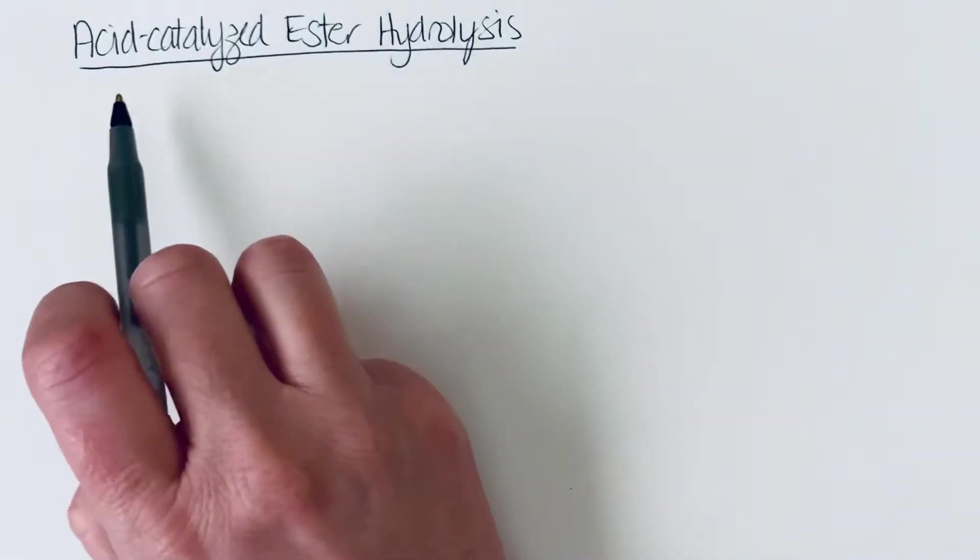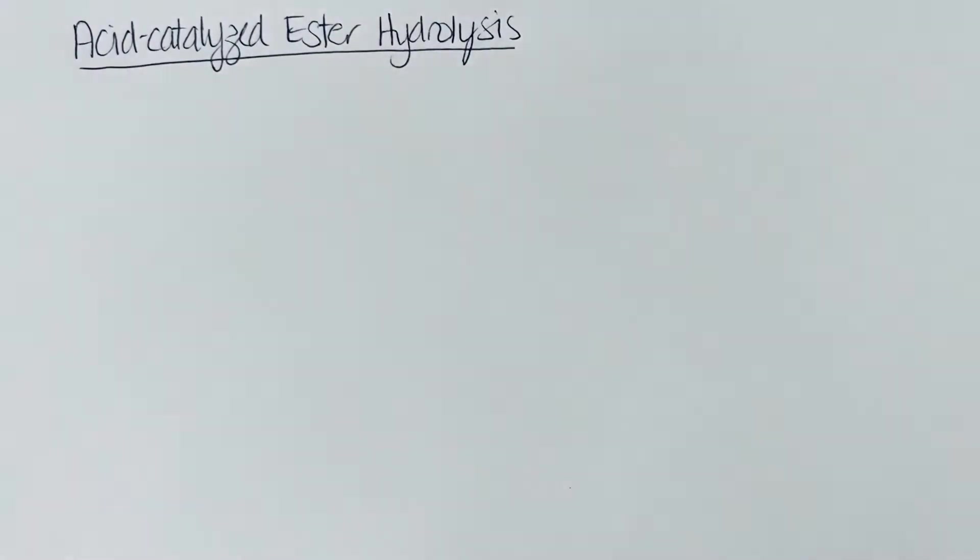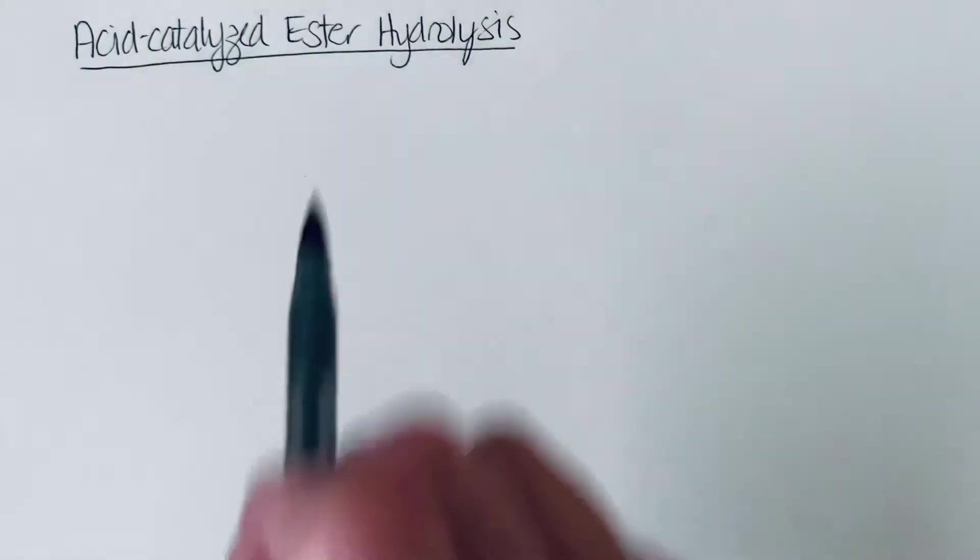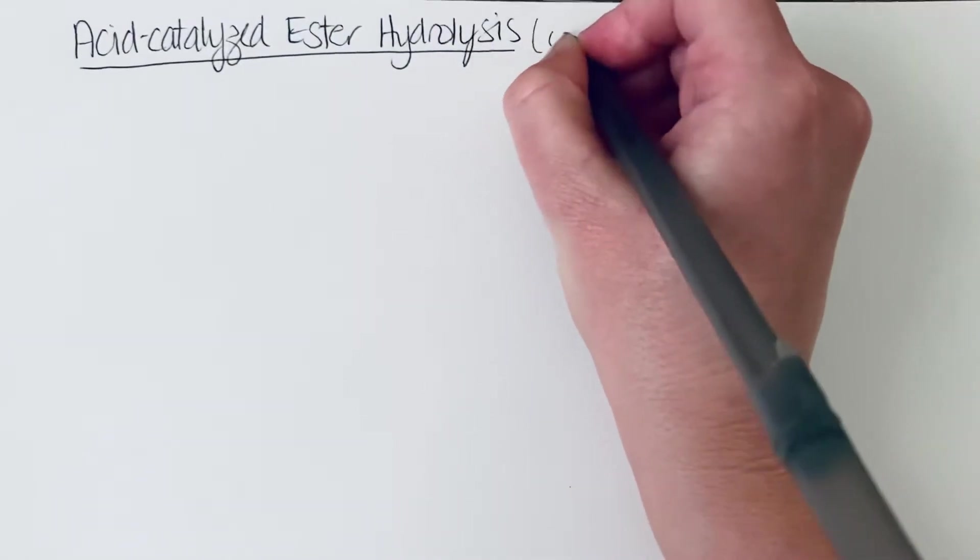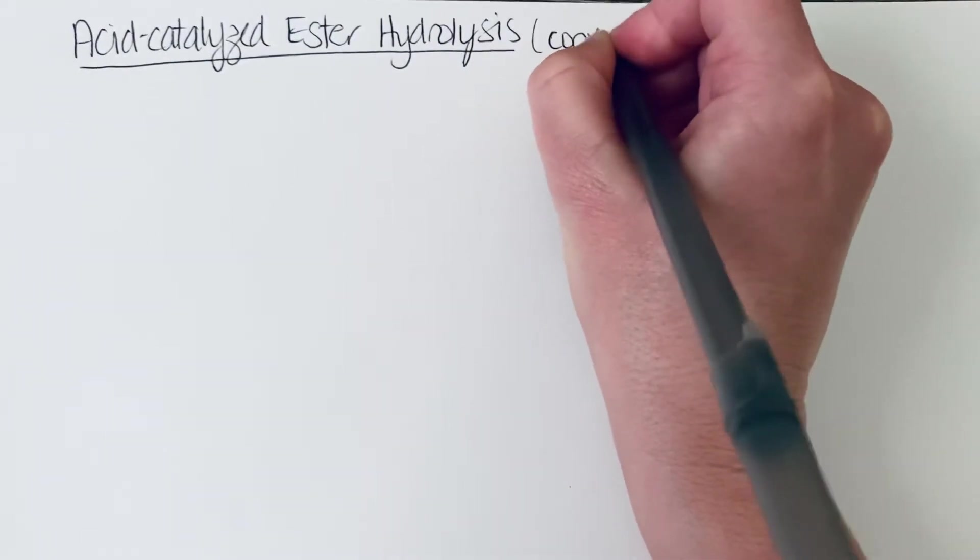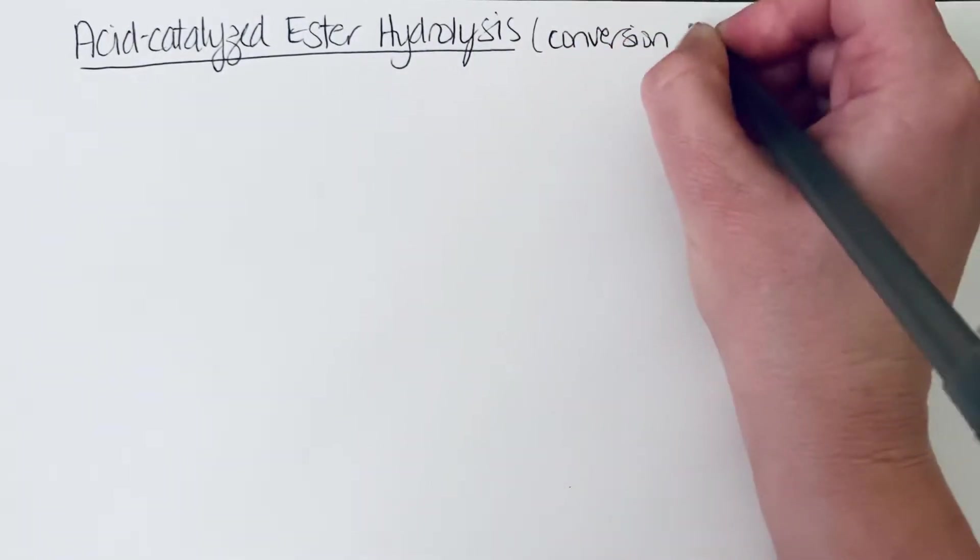In this video, we're going to be looking at the acid-catalyzed hydrolysis of an ester. So an ester is a carboxylic acid derivative, and all carboxylic acid derivatives can be hydrolyzed to give carboxylic acid. So we are converting this to a carboxylic acid.